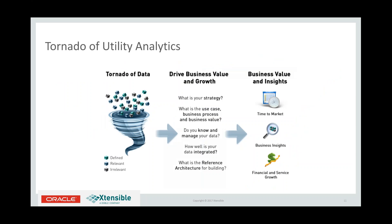What we're really seeing now is a tornado of information and data — a mix of defined data, relevant undefined data we can get our hands on, and information that may not be relevant at all. The idea is to understand that not all data is applicable to all situations, and to be able to quickly filter it and find the information we need. The only way to drive business value and growth is to clearly articulate strategy, understand the various use cases and business processes that support them, and understand what the data is, where it's coming from, its history, accuracy, and how well it's integrated with other data sources.